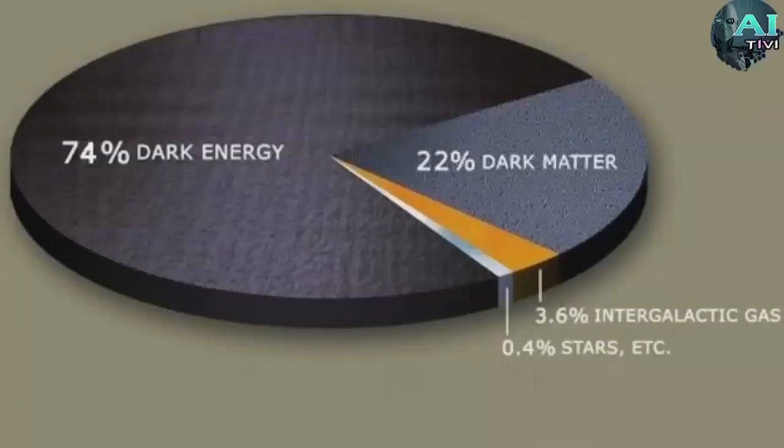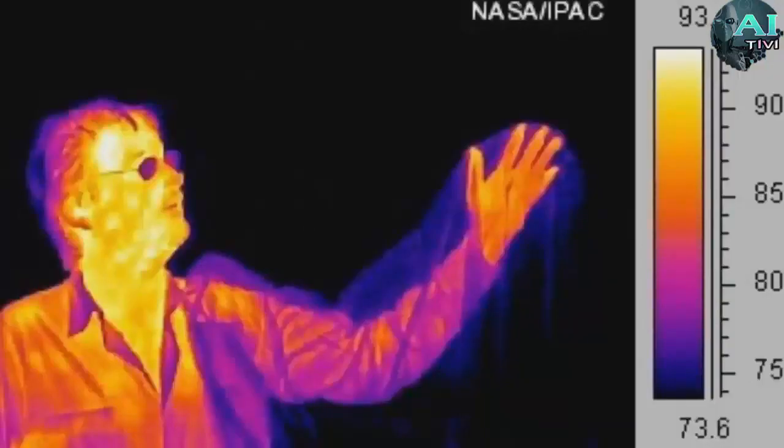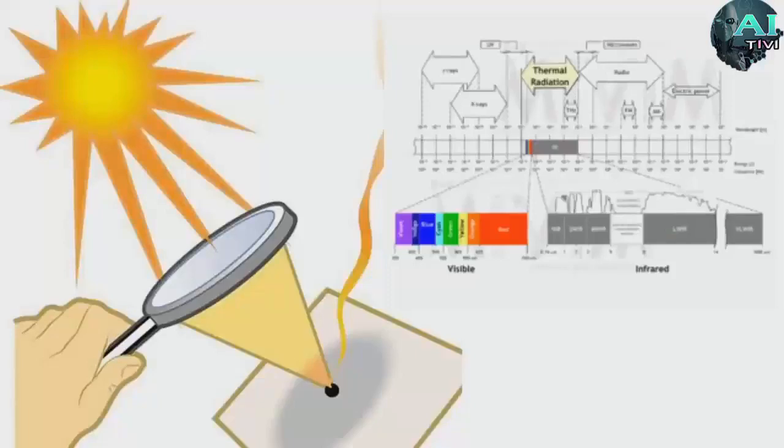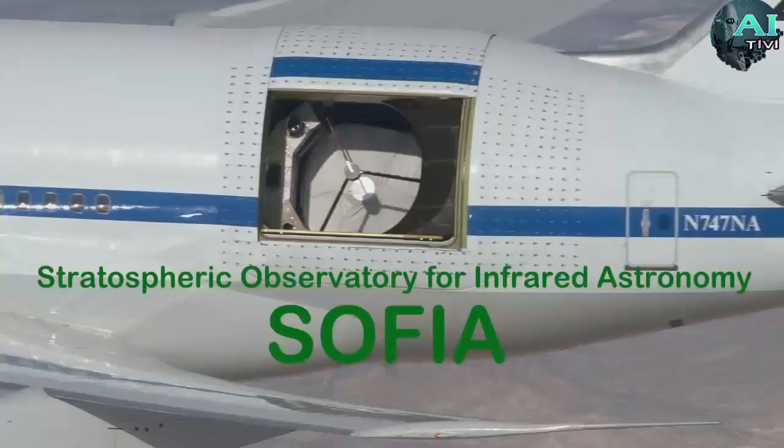The problem is that Dyson Spheres aren't dark. Even a perfect and complete one with total light absorption still emits light, it just emits infrared light. When light strikes an object and is absorbed it gets warmer and begins to cool itself by emitting light of its own. This light, infrared, is usually invisible to the human eye but very visible to our telescopes.